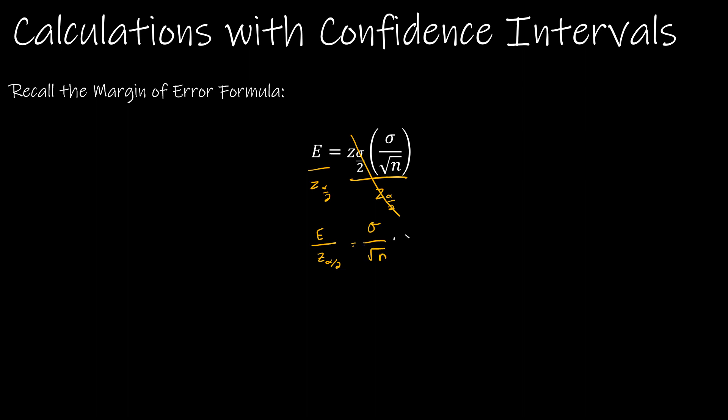Now, I want to get the square root of n so that it's no longer a denominator. So now I have the square root of n times all of this is equal to sigma. So I have E over z alpha over 2, and then on this side, I just have sigma.